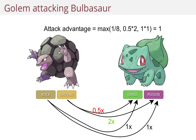We're going to assume that he has access to both, but nothing apart from rock and ground — no normal attacks or anything like that. If he uses a ground attack, the multiplier is 0.5 against grass and 2 against poison, but these have to be multiplied together, so the factor is 1. If he uses a rock attack, on the other hand, both the factors are 1, multiplied together, still 1. So he doesn't have a particularly good attack advantage, but not a bad one either — it's a standard multiplier of 1.